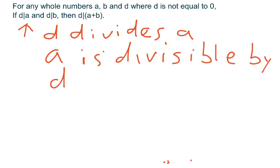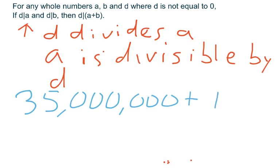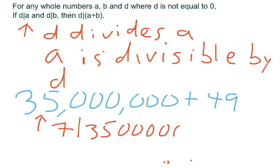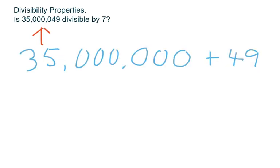So how would that be beneficial here? Well, if we look at the number that we had written as a sum, 35,000,000 plus 49, it's pretty clear that 7 divides into 35, so 7 should divide into 35,000,000. And also, we all know that 7 divides 49. So if 7 divides both 35,000,000 and 7 also divides 49, then according to this theorem, 7 should divide 35,000,000 plus 49. So guess what that means? That means the answer to the previous question was actually yes.